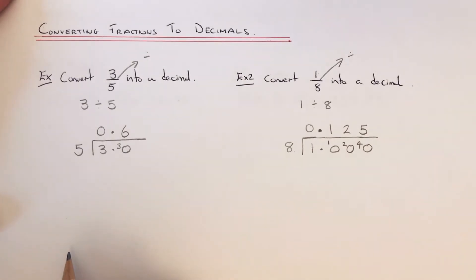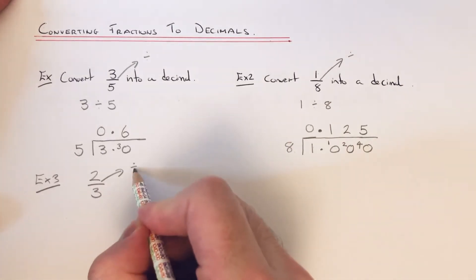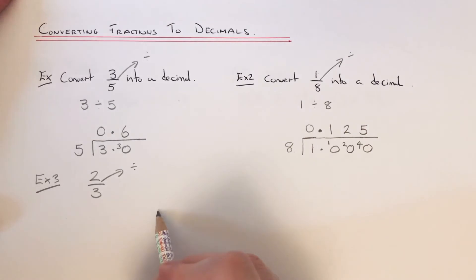Let me do one more example. Example 3, let's do 2/3. Again, that line in the middle means divide, so we need to do 2 divided by 3. Let's put 2.0 and put the 3 there. So 2 divided by 3, again we can't do that, so it's 0 remainder 2.